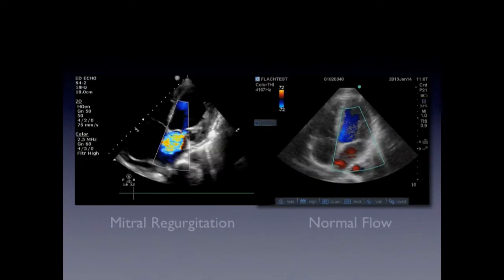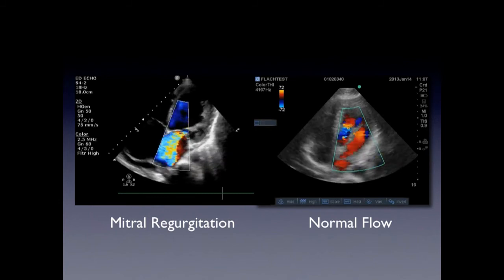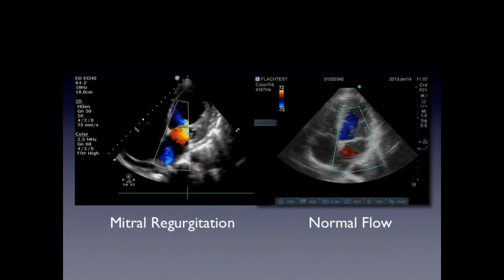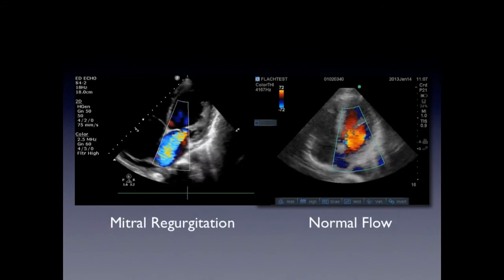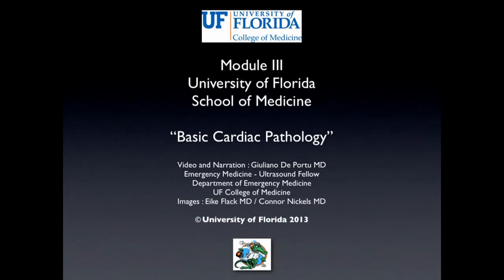You can learn about flow using the Doppler. On the right side, you have normal flow, and on the left side, the mitral regurgitation. Today you've learned how to evaluate for normal ejection fraction using ultrasound. We also looked at pericardial effusion and tamponade, and had an introduction to valvular problems using color Doppler to evaluate flow. That's it for Basic Cardiac Pathology, Module 3. Hope you had a good time — see you in the lab.